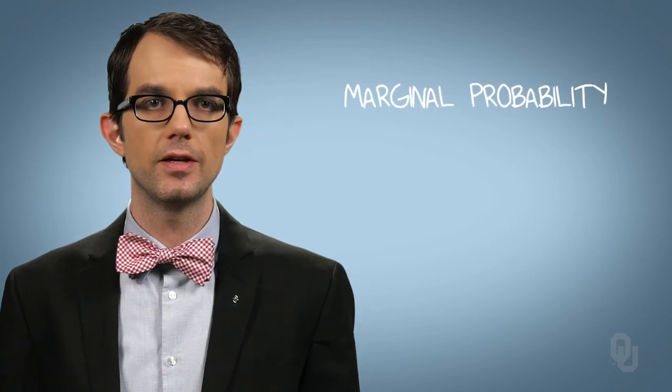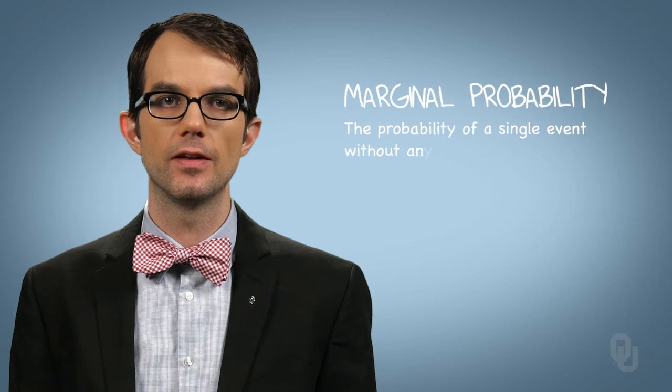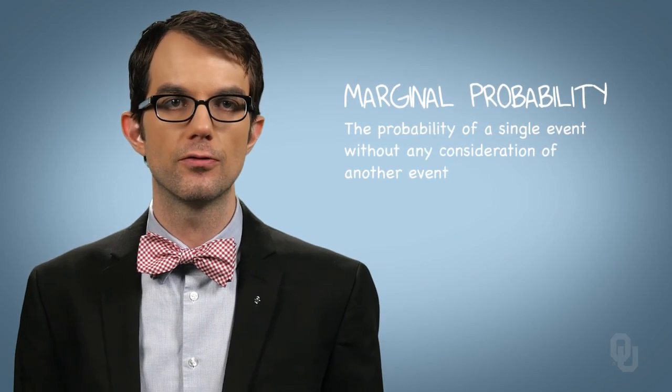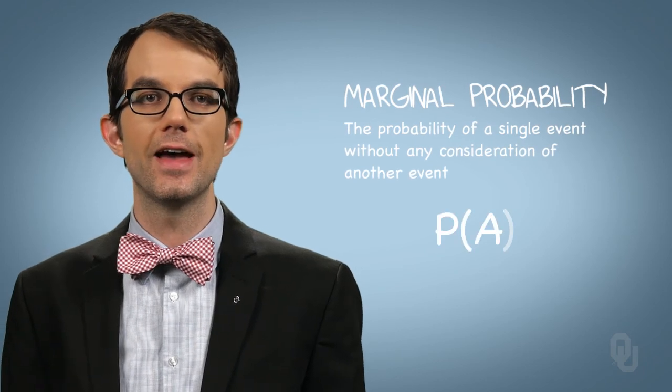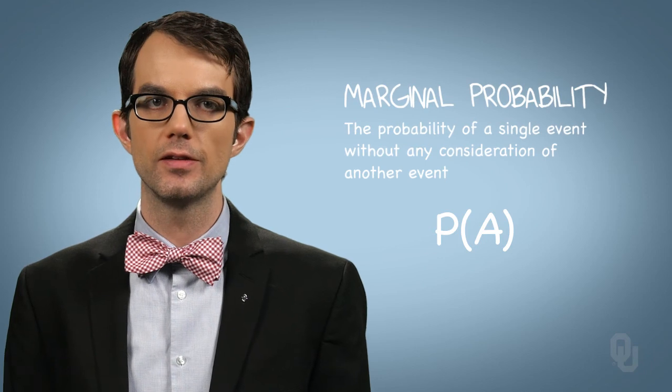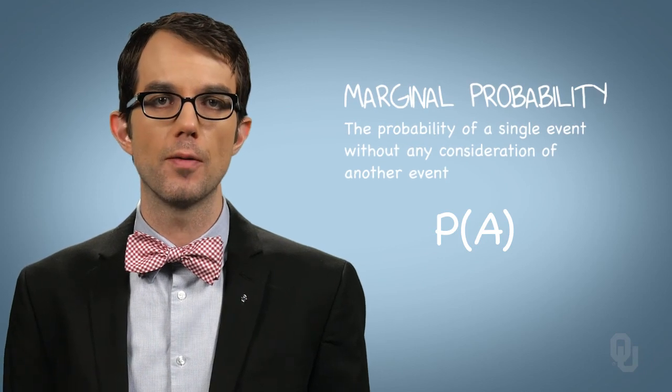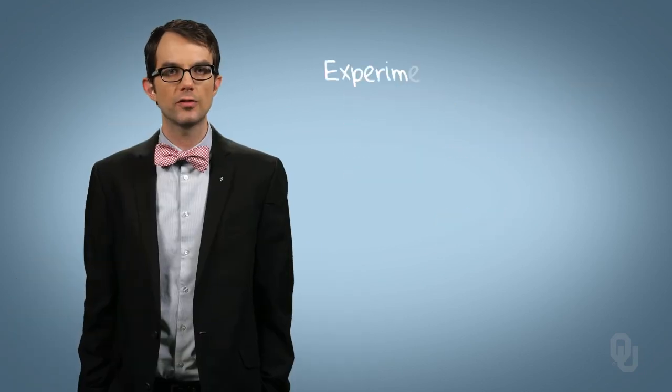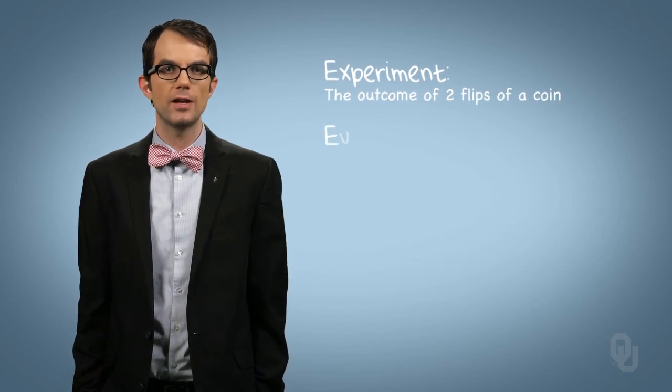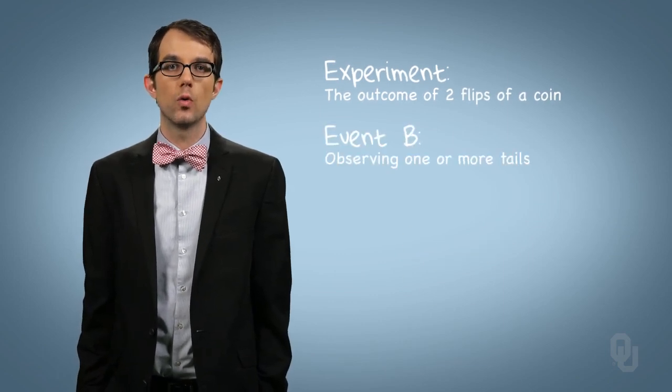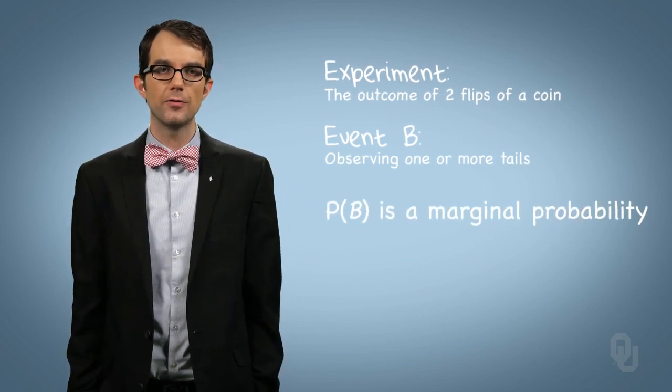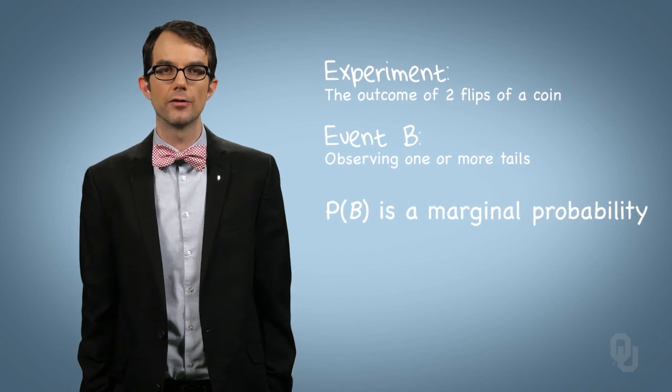One last definition to cover here is marginal probability. A marginal probability is simply the probability of a single event without any consideration of another event. The notation for a marginal probability of event A is P of A, or the probability of A. All the probabilities discussed in this video were marginal probabilities. If we perform an experiment, the outcome of two flips of a coin, and if we define event B as observing one or more tails, then the probability of B is a marginal probability, a single event without any consideration of other events.